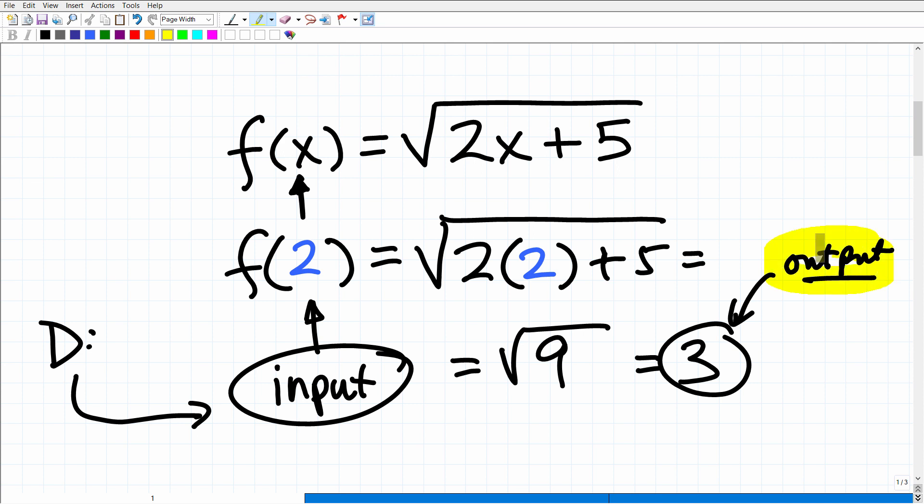So don't concentrate on the output values. You're concentrating on the input values. The output values is something called the range, right? The input value is called the domain.